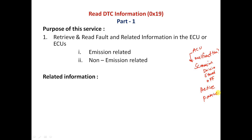Not only that — we also need to know whether the fault is active or not, if it is passive, when it became historic, and whether it is pending, meaning it may become active after some cycles and may become severe. The fault-related information includes the fault scenario, occurrence of the fault, fault status, and the fault aging counter — all of these come under fault-related information.